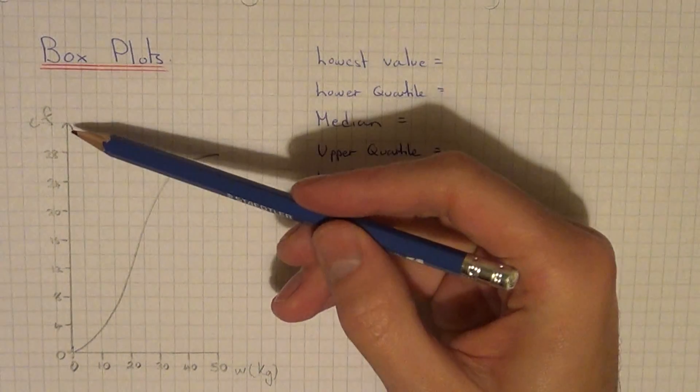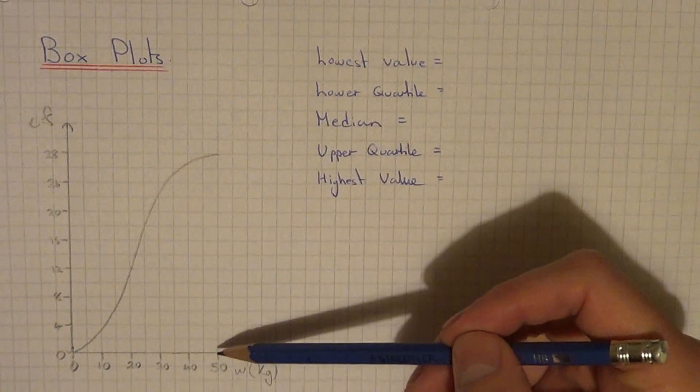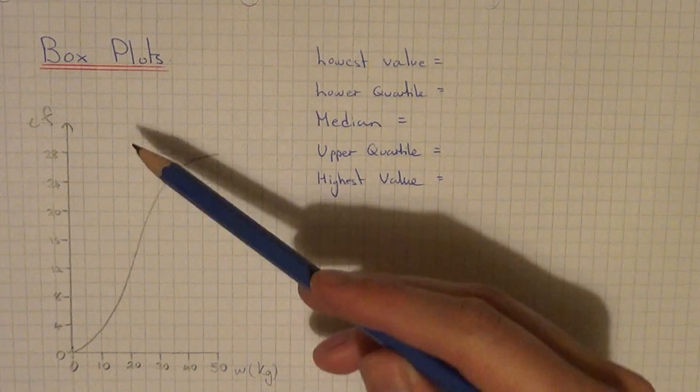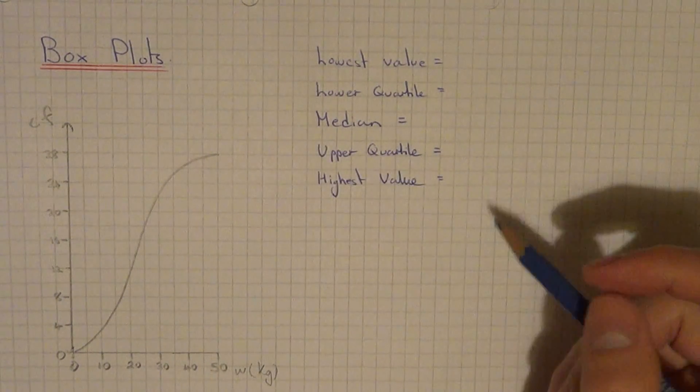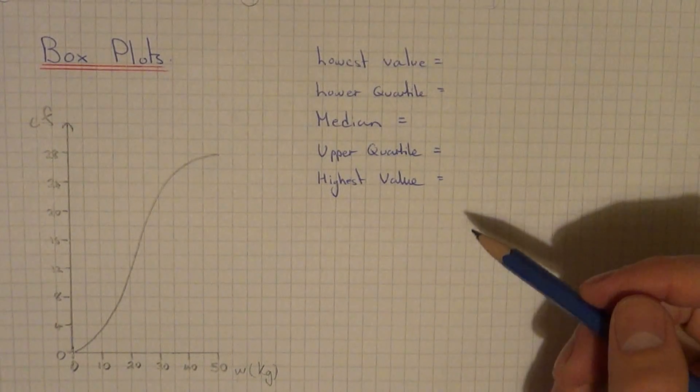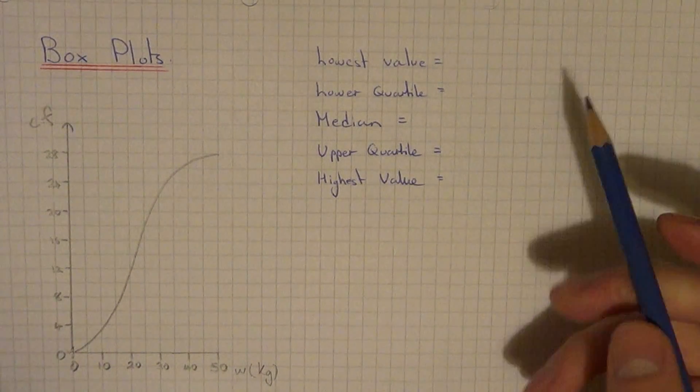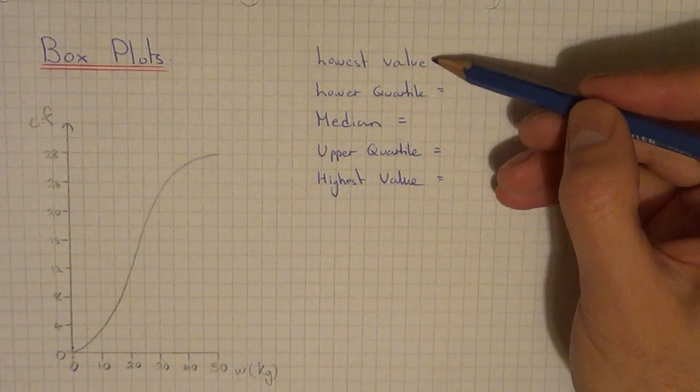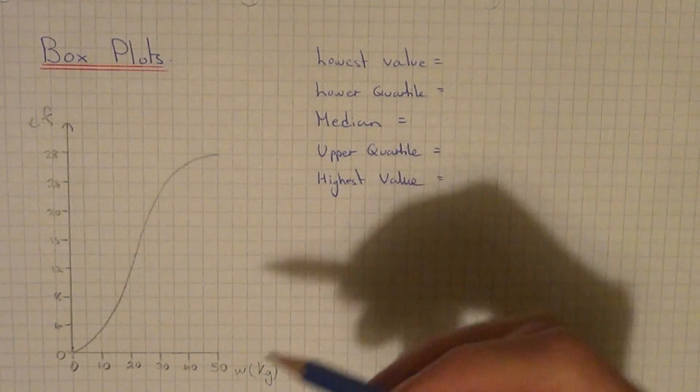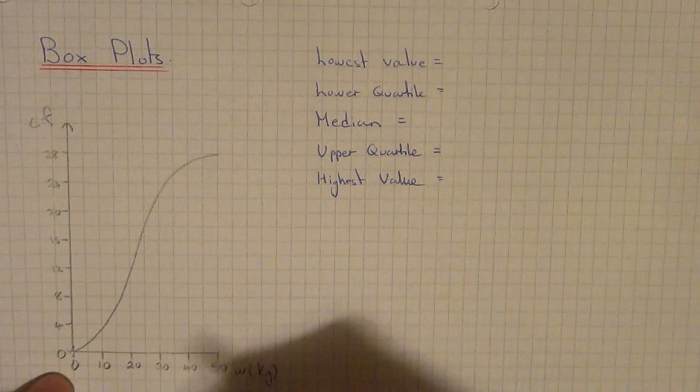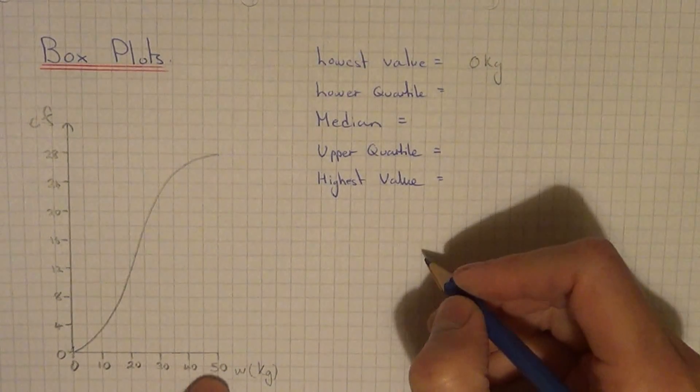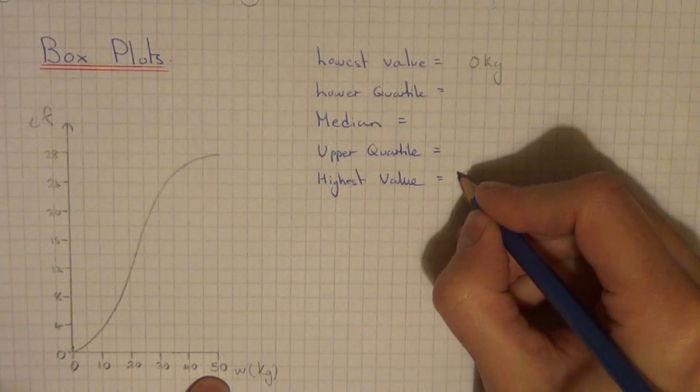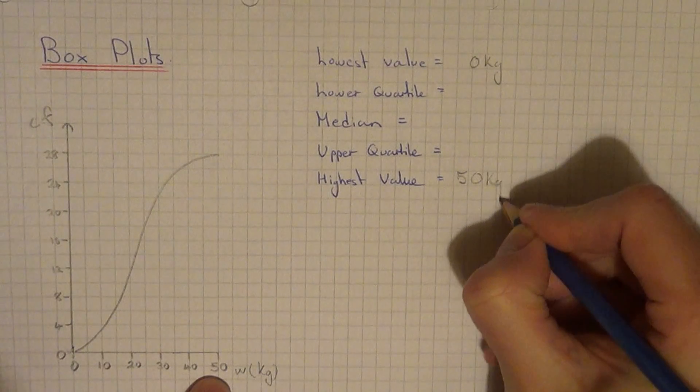So what we've got here in this example, we've got a cumulative frequency curve of the weights of 28 people. So first of all let's write down the lowest and highest values in the data. Sometimes these will be given in the question, but in this example here we haven't got them so I'm going to assume that 0 kg is my lowest weight and 50 kg is my heaviest weight.